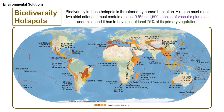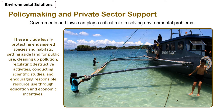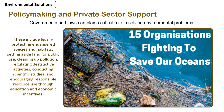A biodiversity hotspot is a biogeographical region with significant levels of biodiversity that is threatened by human habitation. The region must meet two strict criteria: first, it must contain at least 0.5% or 1,500 species of vascular plants as endemics; and it has to have lost at least 75% of its primary vegetation. Governments and laws can play a critical role in solving environmental problems — these include legally protecting endangered species and habitats, setting aside land for public use, cleaning up pollution, regulating destructive activities, conducting scientific studies, and encouraging responsible resource use through education and economic incentives.